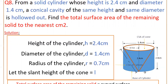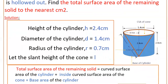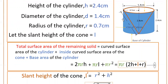You have to add all the areas to get the total surface area of the solid. Writing the given values: the radius of the cylinder as well as the cone is 1.4 divided by 2, that is 0.7 cm. The total surface area of the remaining solid equals curved surface area of the cylinder (2πrh) plus curved surface area of the cone (πrL) plus base area (πr²). Taking πr as common: πr(2h + L + r). This is the first equation.